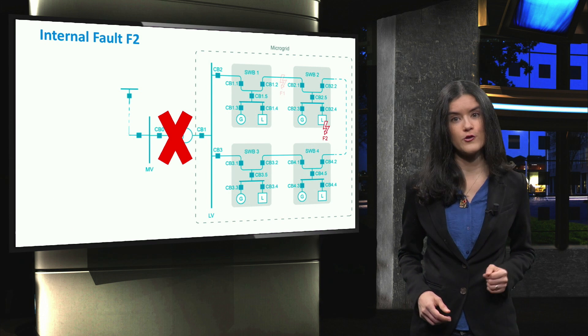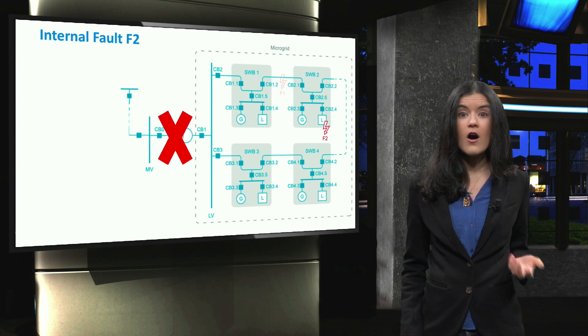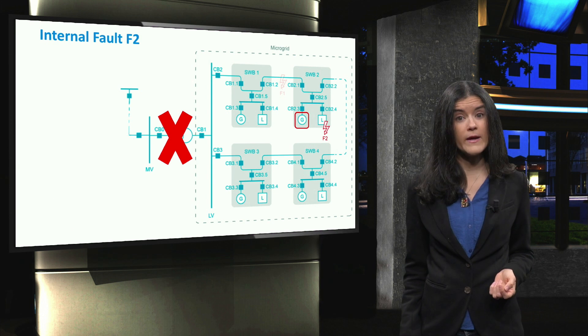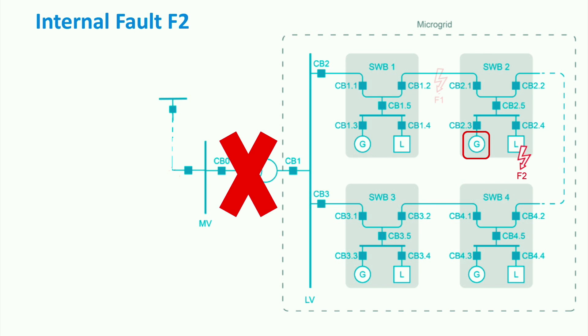If the fault occurs at F2, this would mean that it was caused from the neighboring distributed generators. The settings for CB2.4 are adjusted in such a way that they are just slightly higher than the rated load current of the distributed generators, causing it to trip. If CB2.4 does not trip, then switchboard 2 is isolated by CB2.5 using a directional overcurrent relay. In this case, no sensitivity or selectivity problems are foreseen.